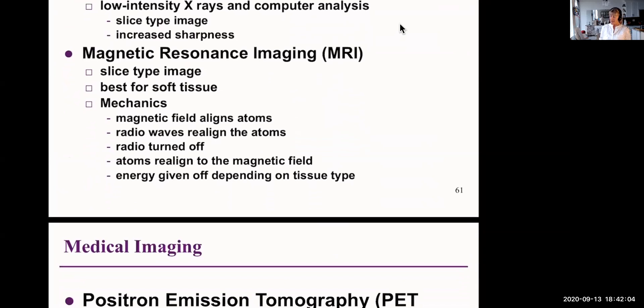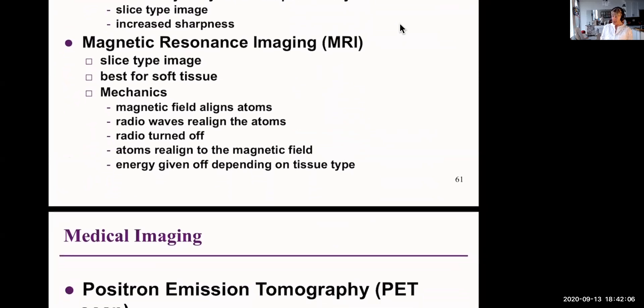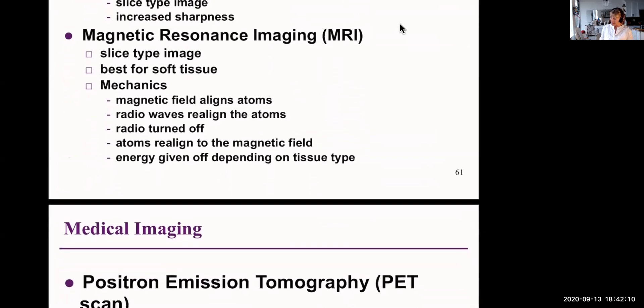Magnetic resonance imaging or MRI, that is very good for soft tissue, and it relies on the fact that atoms, the nucleus of an atom tends to wobble. And so a radio wave can align the atoms. When the radio is turned off, the atoms flip back to their original state and they give off some energy that can be detected.